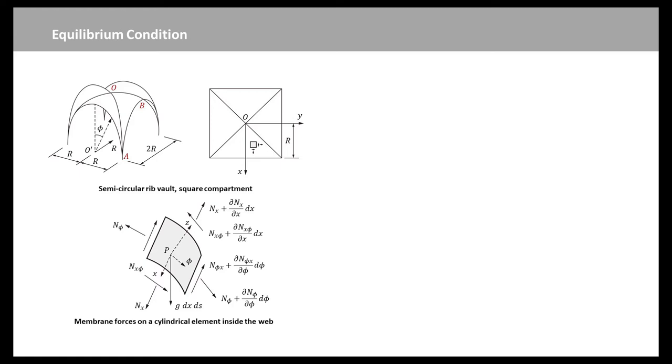The local reference coordinates defined at each point of the web are the abscissa x having the direction of the generatrices and the curvilinear coordinate phi tangent to the semicircular directrices. Now consider these small elements as contained within the web.